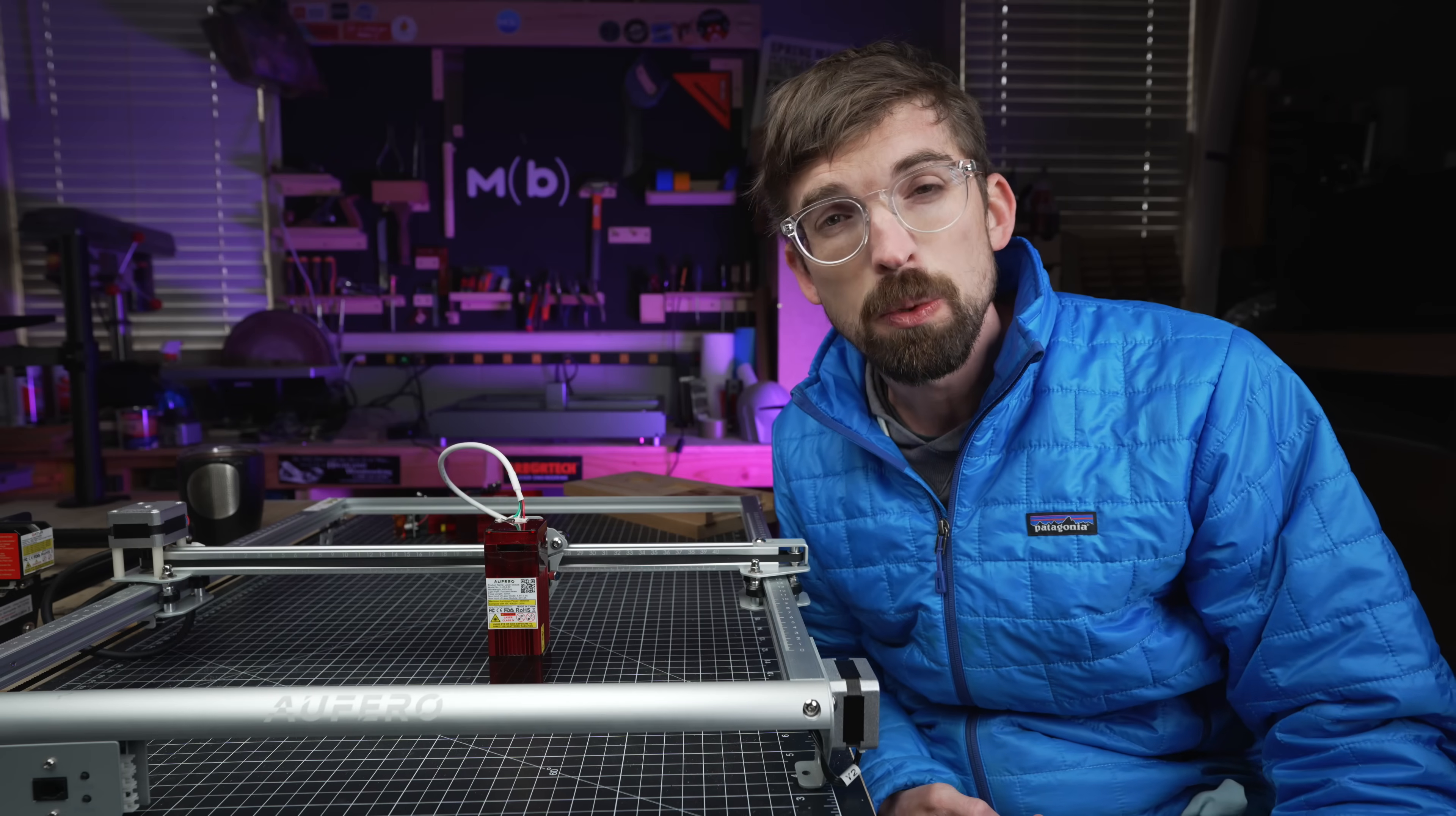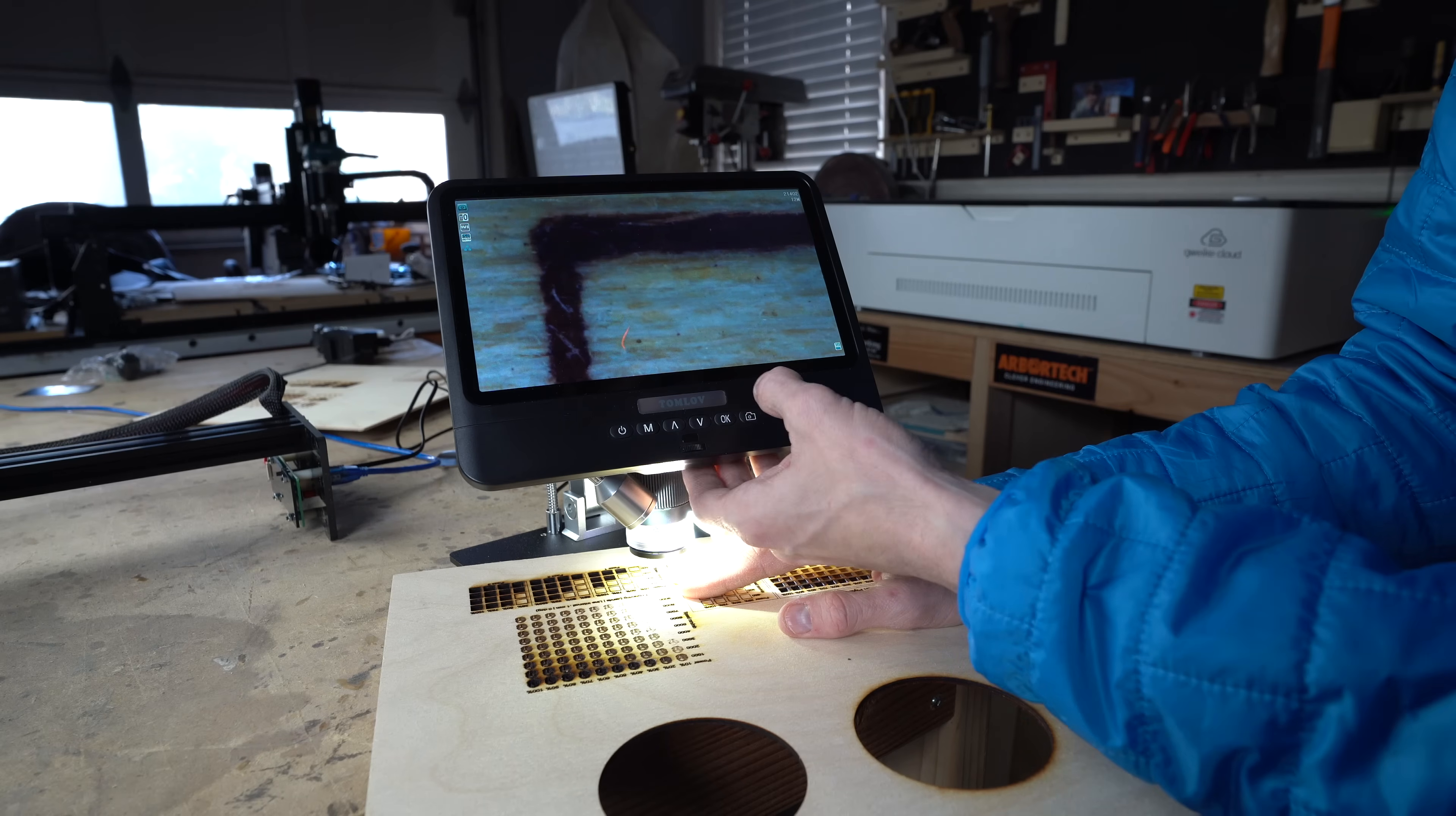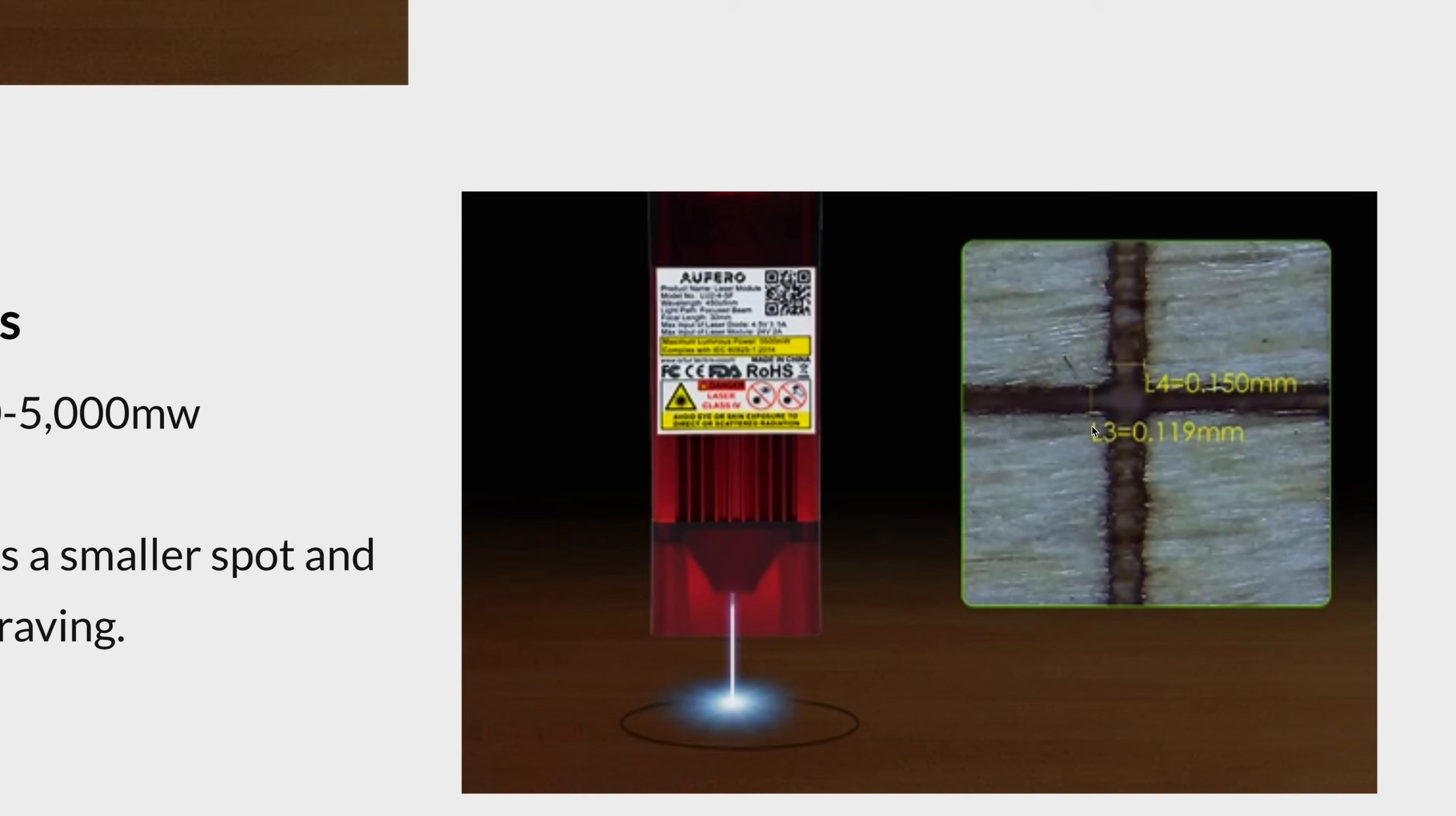Now the biggest thing that's going to impact the resolution of those pictures that you're engraving is going to be the size of the laser dot. I actually like to test out the size of that. What I basically do is take a line that this has engraved, put it under a video microscope, take a picture and blow it up. And we'll check out the size of that right now. So looking at the short focus module on the website, you can see they're giving us a 0.119 in the Y direction and a 0.15 in the X.